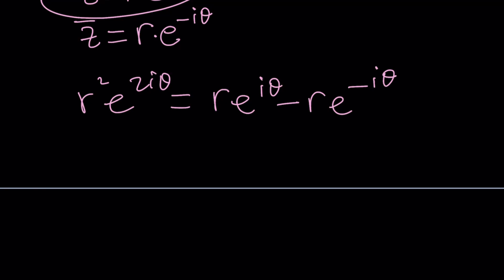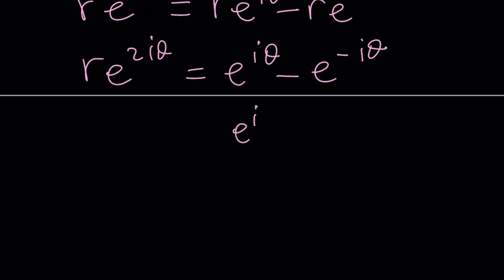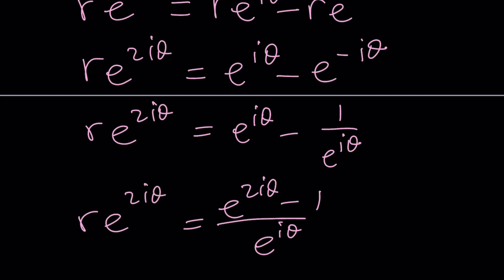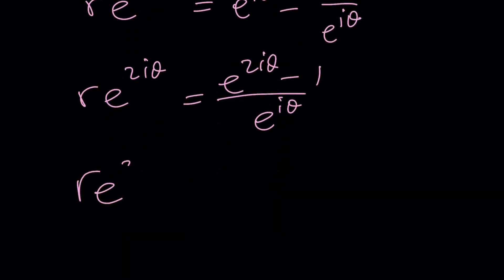Now, z squared is just going to be square this. That's going to be r squared e to the 2i theta. And that's going to be the difference between r e to the i theta minus r e to the negative i theta. Great. So we can take out an r. r is going to cancel out. And then we're going to get e to the i theta minus e to the negative i theta. And we can definitely make a common denominator. e to the i theta minus 1 over e to the i theta. And then this is r e to the 2i theta. Make a common denominator. That's going to give you e to the 2i theta minus 1 over e to the i theta, which is equal to r e to the 2i theta.